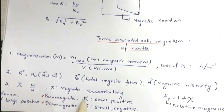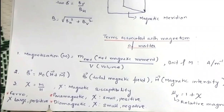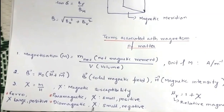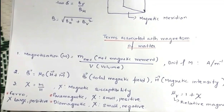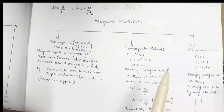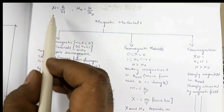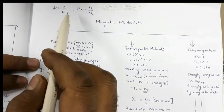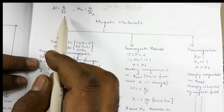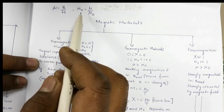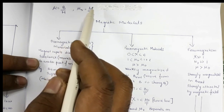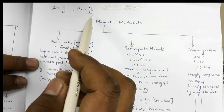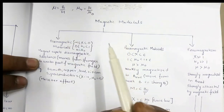The magnetic susceptibility χ is small and positive for paramagnetic materials, large and positive for ferromagnetic materials, and small and negative for diamagnetic materials. Magnetic permeability is also the ratio of the magnetic field to magnetic intensity, and relative magnetic permeability is the ratio of magnetic permeability to the magnetic permeability of free space.